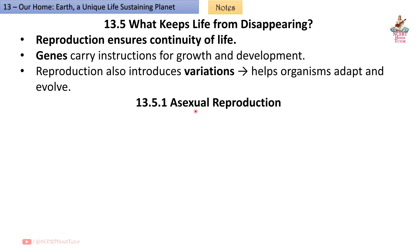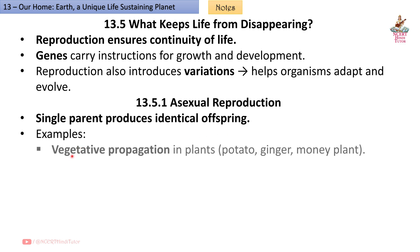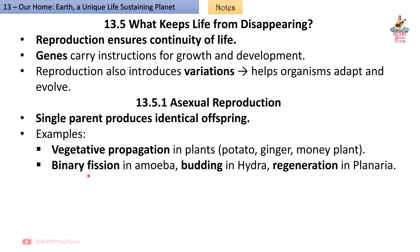13.5.1 Asexual reproduction: Single parent produces identical offspring. Examples: Vegetative propagation in plants (potato, ginger, money plant), binary fission in amoeba, budding in hydra, regeneration in planaria.